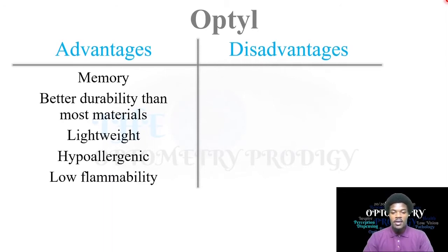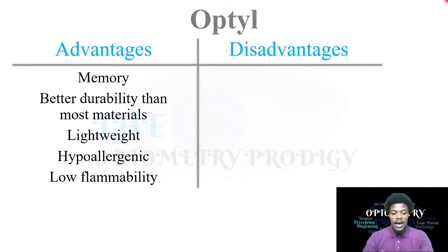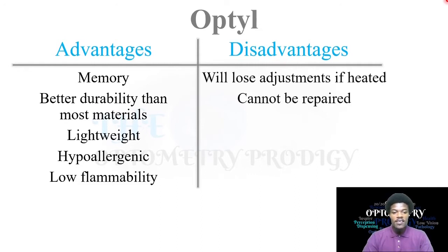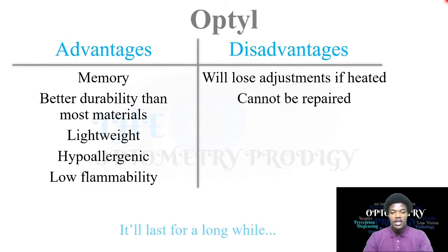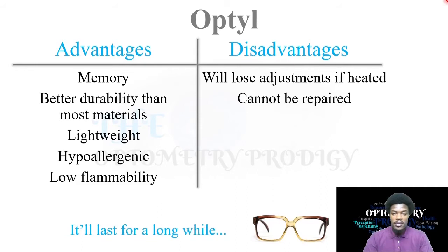Now Optyl. The key advantage is that it is a memory material — if it is deformed and then heated, it will return to its original form. It also has better durability than most materials, is lightweight, hypoallergenic, and has low flammability. The disadvantages are that it will lose its adjustments if heated, and it cannot be repaired. The memory aspect is both an advantage and disadvantage. The tip is that it will last a long time due to its memory ability and durability.